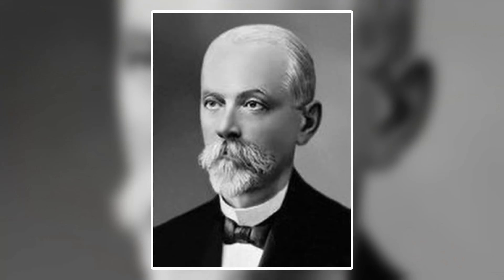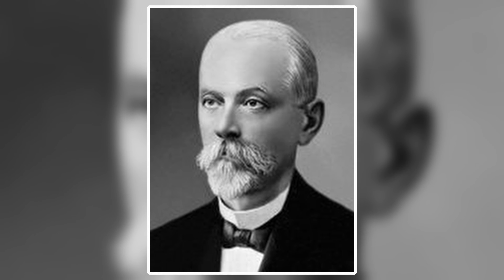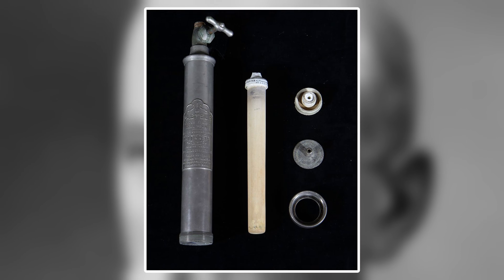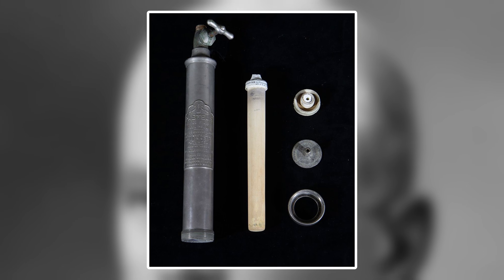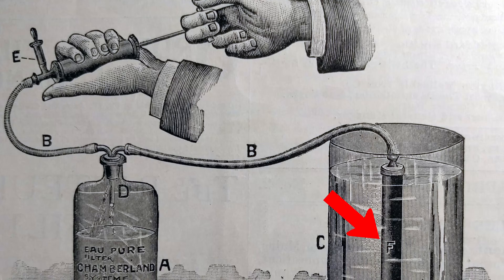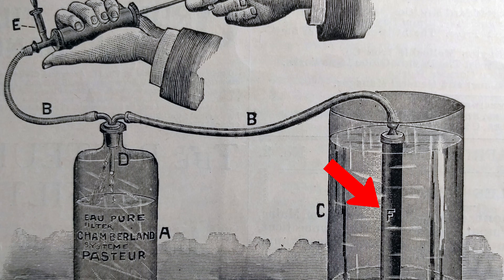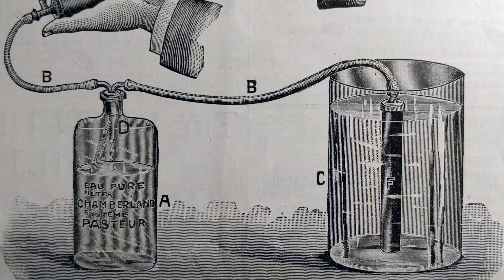From studying both tobacco diseases, Ivanovsky decided to do his own filtration process, but rather than using several layers of filter paper, he utilized a newly developed filtration device called a Chamberlain filter. This filter, developed by Louis Pasteur's assistant Charles Chamberlain in 1884, consisted of a permeable unglazed porcelain tube, which has pores so small that the smallest known organism at the time, bacteria, could not pass through them.